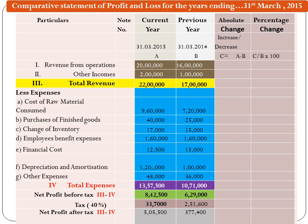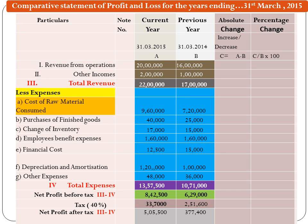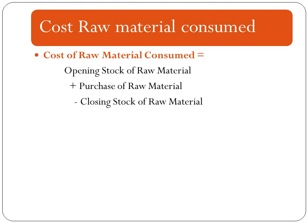The total of Revenue from Operations and Other Incomes will be Total Revenue. The first item of Expense is Cost of Raw Material Consumed. All Manufacturing Concerns have Raw Material which is ultimately converted into Finished Goods. If the amount is not given, it is calculated as: Opening Stock of Raw Material plus Purchases of Raw Material minus Closing Stock of Raw Material.